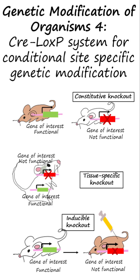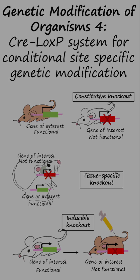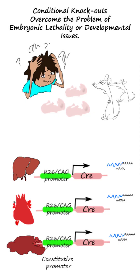The Cre-loxP system can create tissue-specific and inducible knockouts. This conditional gene modification system overcomes the problem of embryonic lethality or developmental issues resulting from knockouts occurring in all cell types or without temporal control by external signals.